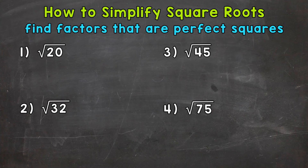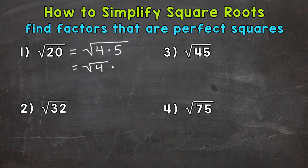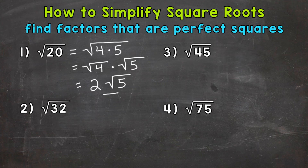We can simplify by looking for factors of 20 that are perfect squares. We know that 4 times 5 equals 20, and 4 is a perfect square. So the square root of 20 equals the square root of 4 times 5. Using the product property of square roots, we can split this into the square root of 4 times the square root of 5. The square root of 4 is 2, and we bring down our square root of 5. So our simplified answer is 2 times the square root of 5, or 2√5.